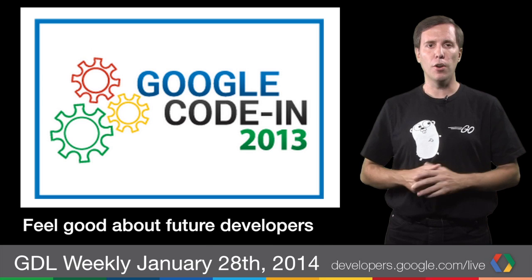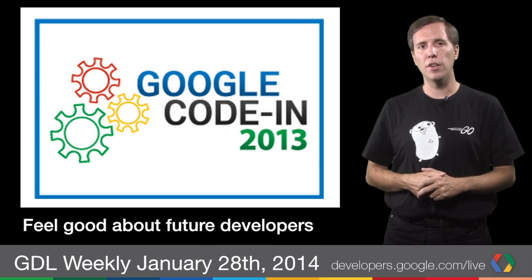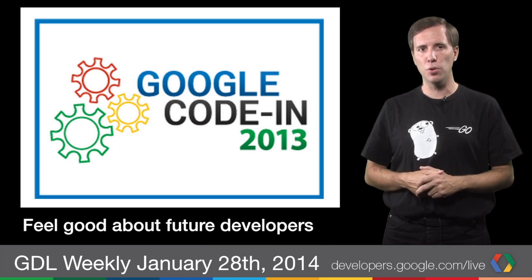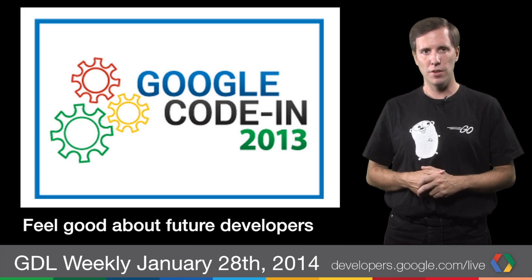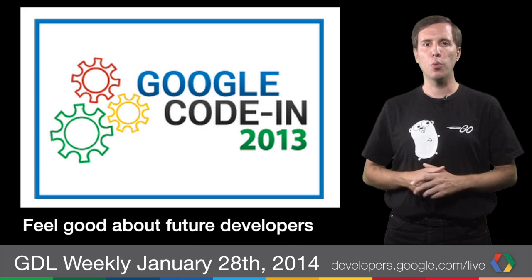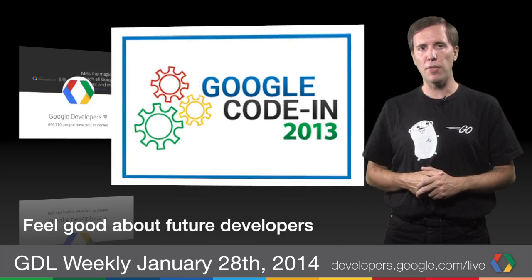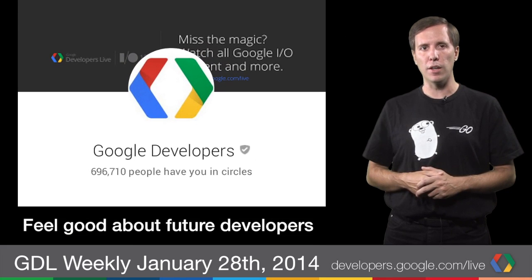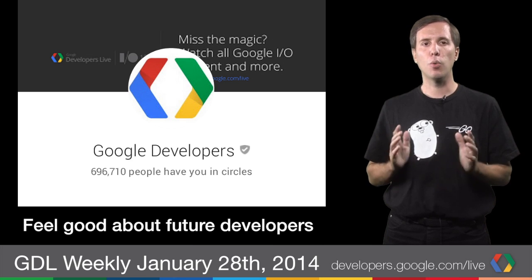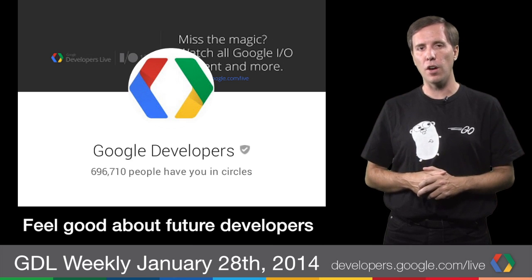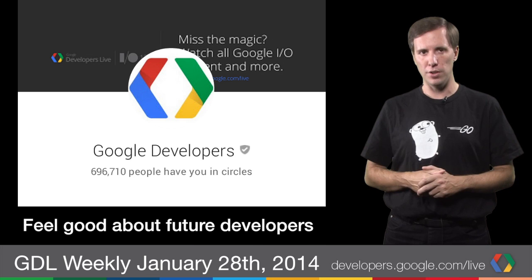And every year, Google Code In finds amazing teenage programmers from around the world and awards them a four-day trip to Google in Mountain View. This year's 20 winners have been announced, and you can read about them on our blog at googledevelopers.blogspot.com. Congratulations to the 20 winners and the hundreds more who entered.